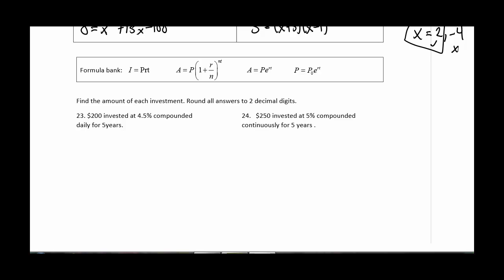So in this first question, let's see, find the amount of each investment and then round to two decimal digits. So we get $200 invested at 4.5% compounded daily for 5 years. Okay, so compounded daily means we're going to use this formula here. And so it's A equals 200, 1 plus, I need to convert that 4.5 to a decimal, so .045 daily. There are 365 days in a year. And then raise that to the 365 times 5.